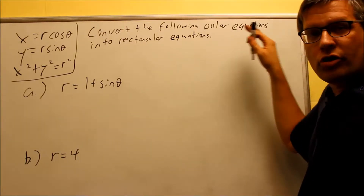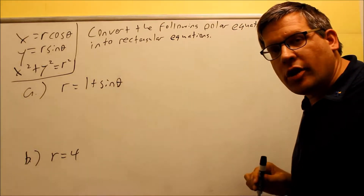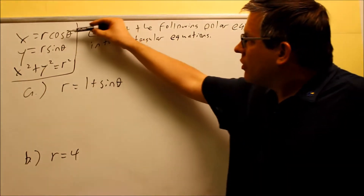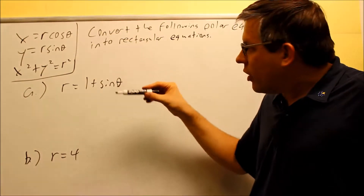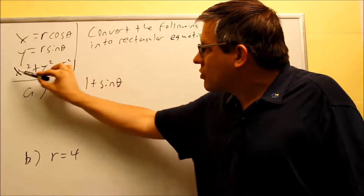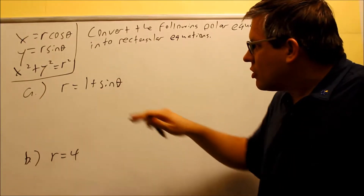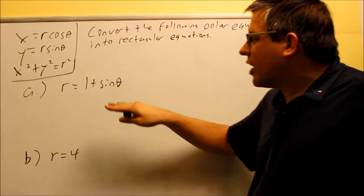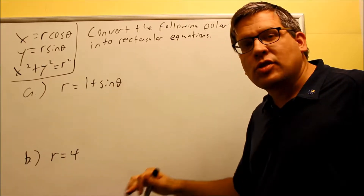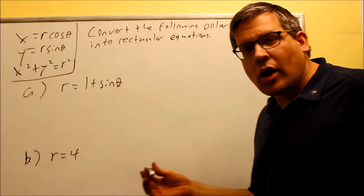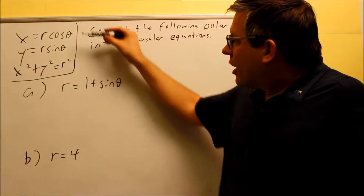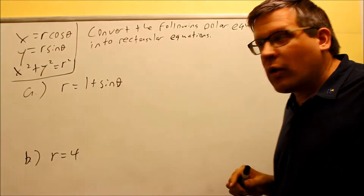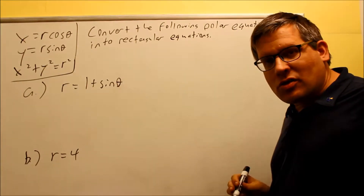Now we want to convert polar equations into rectangular equations. Here are the three formulas from the beginning of this section. The first two we've already looked at, but we also have this one as well. The idea is you want to convert into rectangular coordinates, which means I don't want r's and thetas — I want to change everything over into x's and y's.